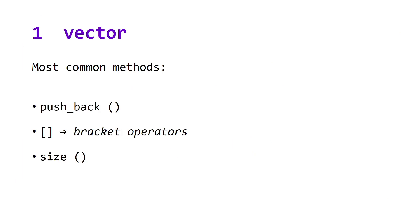Data structure one: vector. The three most common methods of vector are push_back, the bracket operators, and size. The runtime of these three methods are constant.